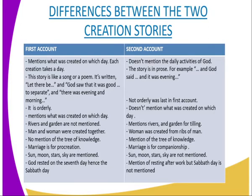Another difference: in the first account of creation, there is no mention of the tree of knowledge. But in the second account of creation, there is mention of the tree of knowledge in the middle, which man was told not to eat from. Also, in the first account marriage is for procreation, while in the second account marriage is for companionship.